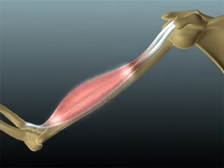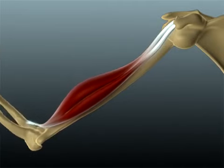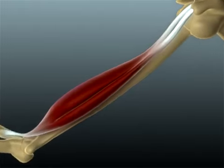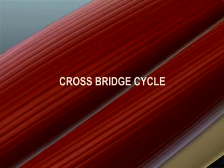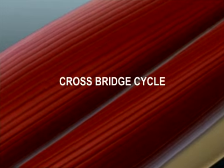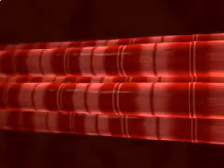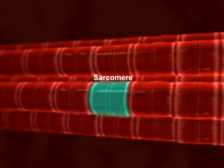The contraction of a skeletal muscle generates the force necessary to move the skeleton. A contraction is triggered by a series of molecular events known as the crossbridge cycle. In a skeletal muscle fiber, the functional unit of contraction is called the sarcomere.